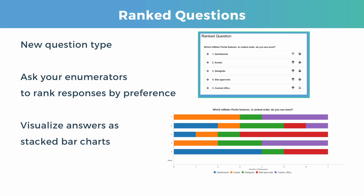This question type helps a data manager or a surveyor to accumulate data that can help teams make faster and better decisions. So before we continue, let's learn about ranking questions. A ranking question is a type of question that asks respondents to compare and arrange multiple options based on their preferences. This arrangement can be from the most preferred to the least preferred, or vice versa.